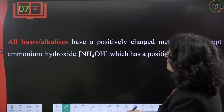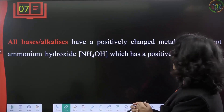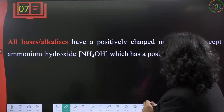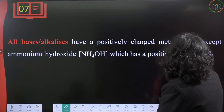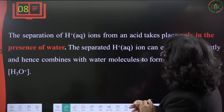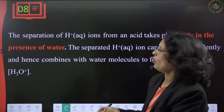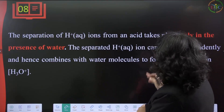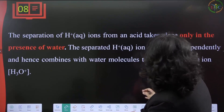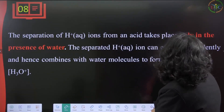All alkalis have a positively charged metallic ion, except ammonium hydroxide which has the positively charged ammonium radical NH₄⁺. The separation of H⁺ ions from an acid takes place only in the presence of water. The separated H⁺ ion cannot exist independently and combines with a water molecule to form a hydronium ion (H₃O⁺).